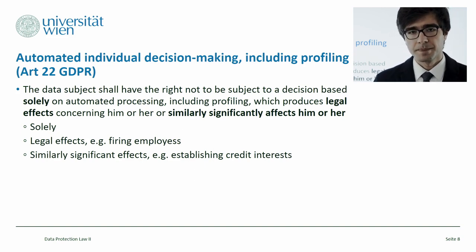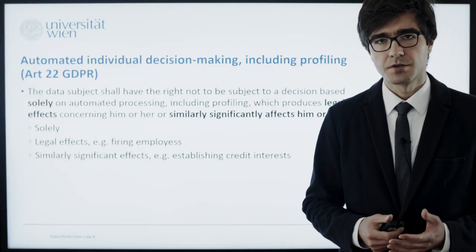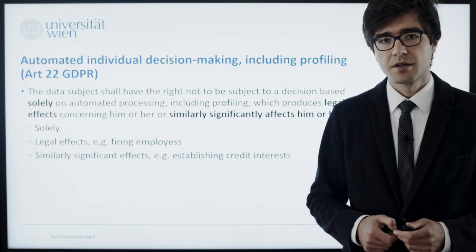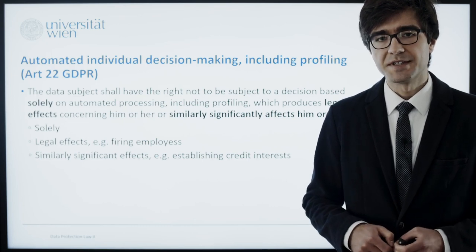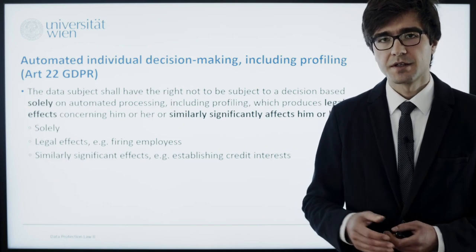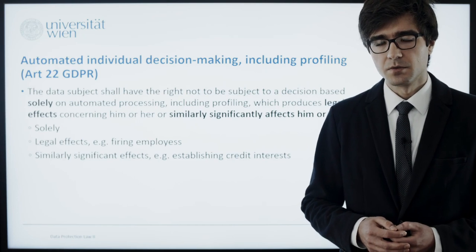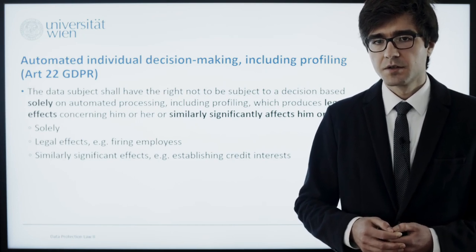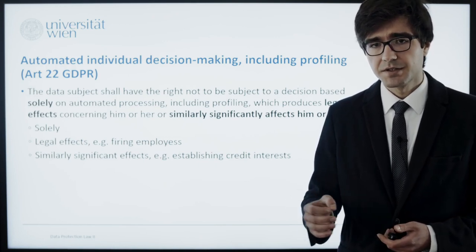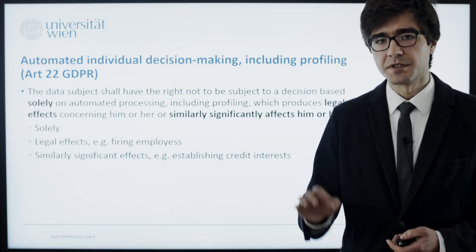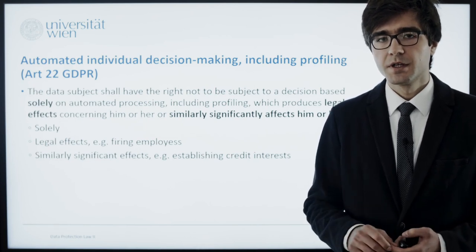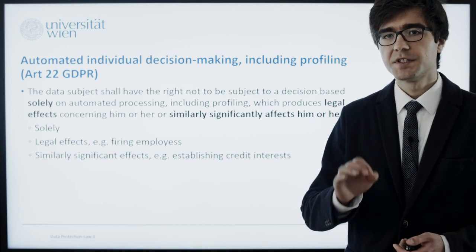What does it all mean? Well, take an example of a mortgage or a credit. You want to get a credit from a bank, and the bank will not use people to decide how high your interest should be, but rather an automated decision-making system. It will analyze your data and then provide the bank with a suggested interest for you and your credit. In this case, if there is absolutely no human involvement in the whole process — which rarely takes place — then you would have the right not to be subject to this decision.